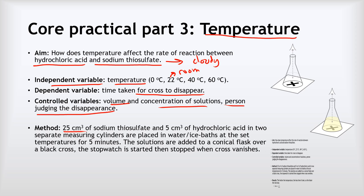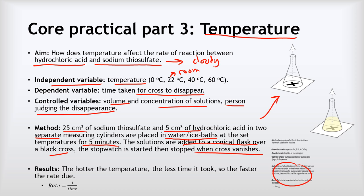For our method, we had 25 cm³ of sodium thiosulfate and 5 cm³ of hydrochloric acid in two separate measuring cylinders — they must be kept separate initially. They were placed in water or ice baths at the set temperature for five minutes to get them to the right temperature. Then we mixed them in a conical flask over a black cross, started the stopwatch, and stopped it when the cross had disappeared. What we found was that the hotter the temperature, the less time it took — so the faster the rate. The rate was calculated as 1 divided by the time taken.